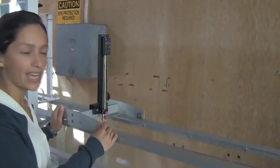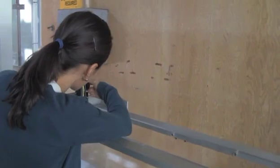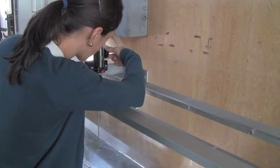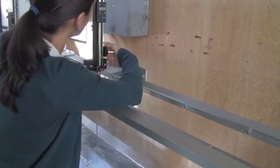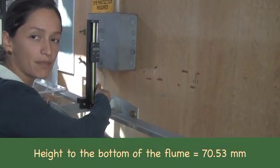Now we are going to measure the height to the bottom of the flume. The height is 70.53 millimeters.